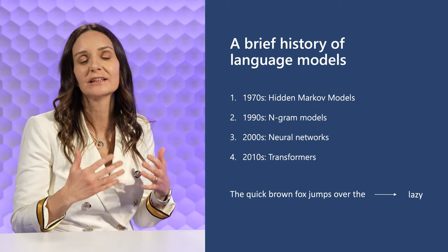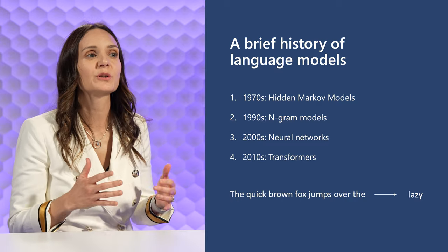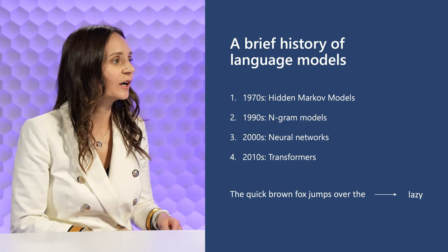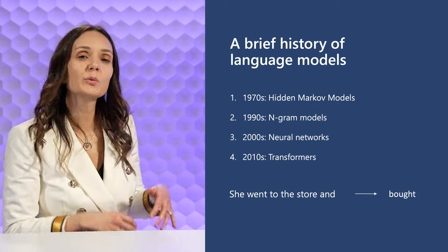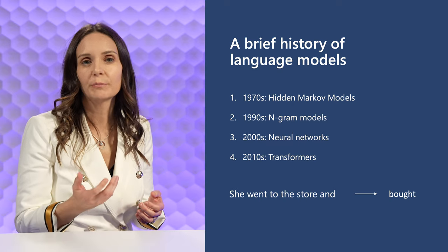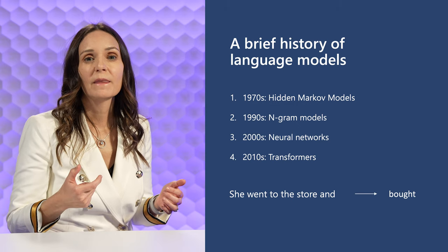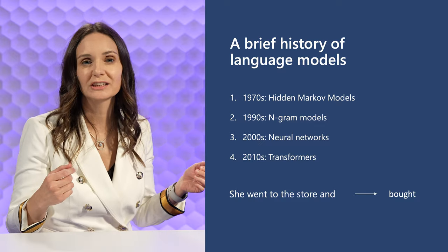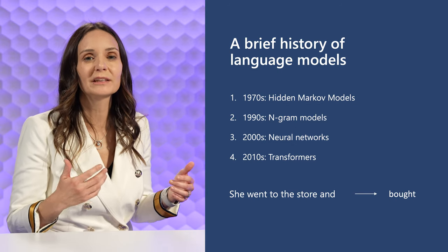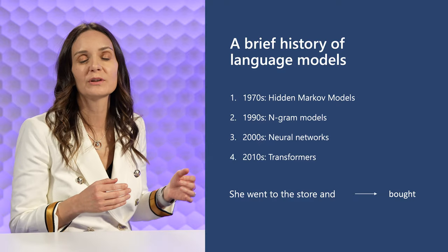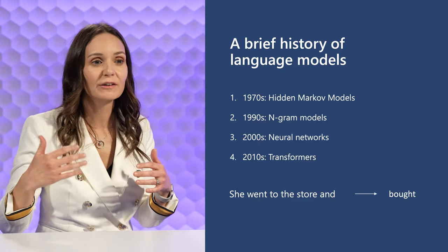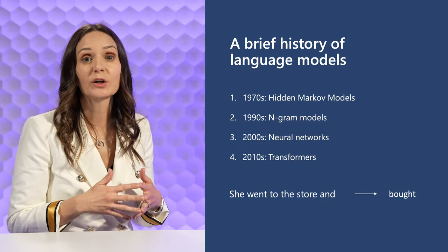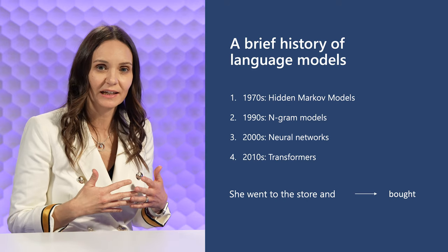Transformers are based on the idea of attention, or the attention mechanism. This means the model is able to pay more attention to some inputs than others. For example, in the sentence 'she went to the store,' the model might predict 'bought' — and the past tense of that verb comes from the second token, 'went.' The model understands that and will pay more attention to 'went' than to 'and,' even though 'and' appears earlier in the input. Transformers and attention are still what is used today in OpenAI's GPT models.